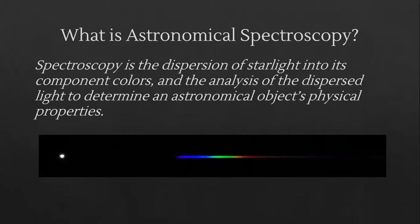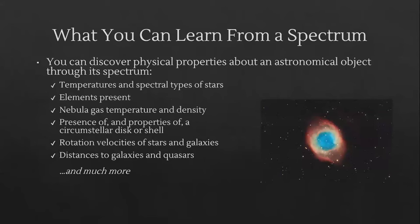So let's start with the question: what is astronomical spectroscopy? Simply put, it's the process of dispersing starlight into its component colors and performing analysis of that dispersed light to determine the physical properties of astronomical objects. You can learn a lot from a spectrum — things like the temperatures and spectral types of stars, what elements are present, the gas temperature and density of a nebula, the presence and properties of a circumstellar disk or shell, the rotation velocities of galaxies, distances to galaxies and quasars, and much more.